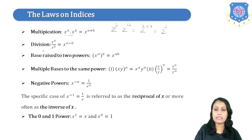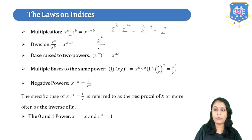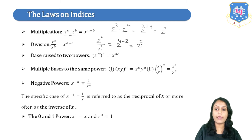The next law is division: x raised to a upon x raised to b will give you x raised to a minus b. For example, 2 raised to 4 upon 2 raised to 2 — the base is the same and it is in division, so we subtract the powers, giving 2 raised to 2, that is 2 squared.